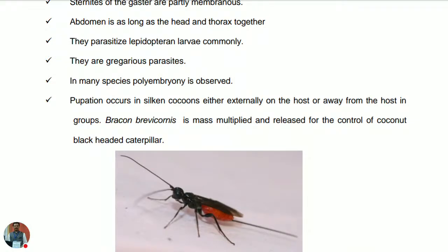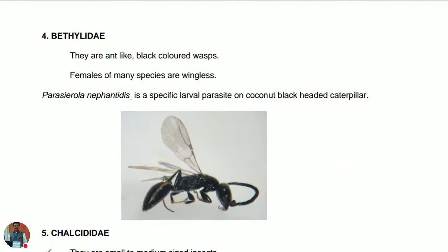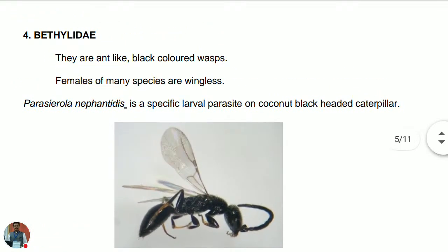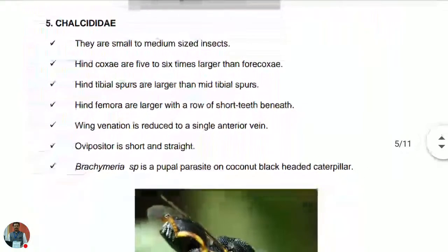The next family is Bethylidae — ant-like, black-colored wasps. Females of many species are wingless. Example: Goniozus nephantidis, a specific larval parasite against the coconut blackheaded caterpillar.